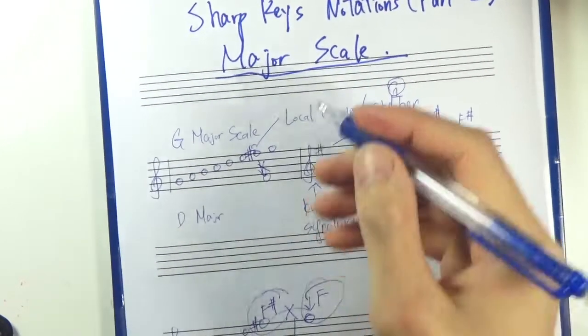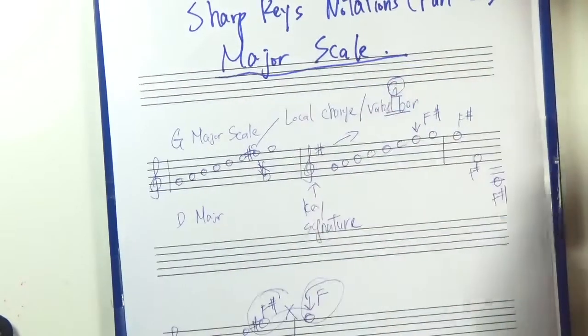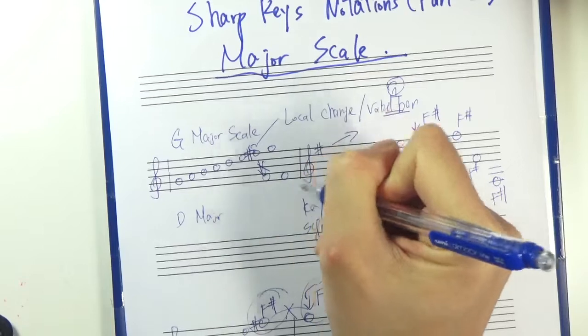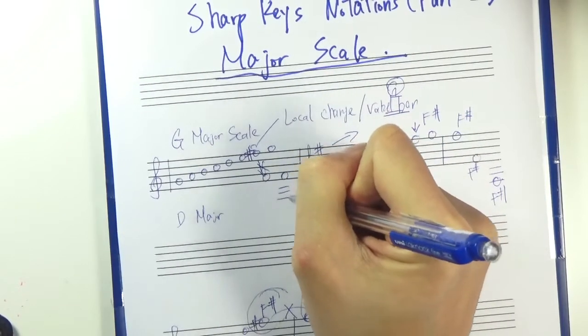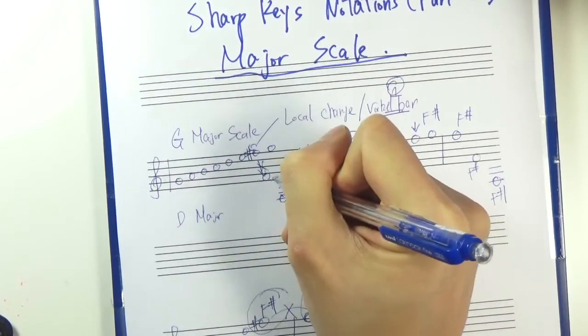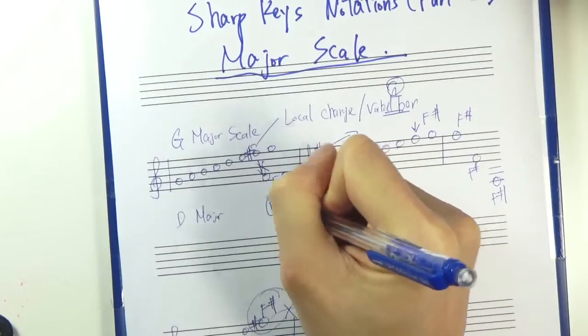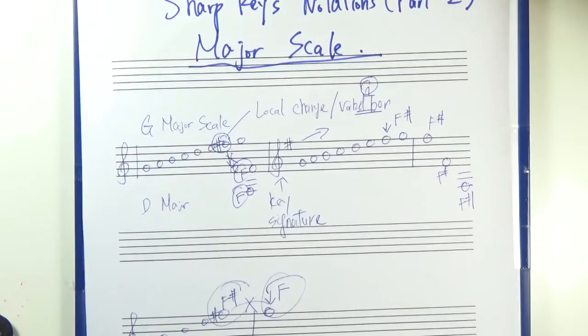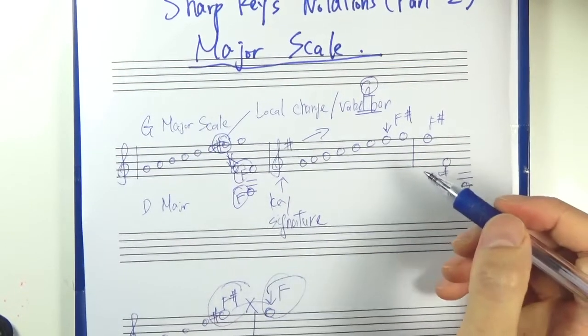Alright. So that's the difference here. If I have other Fs in other octaves here, say this one. And also this one. These are going to be Fs. And only this one is going to be an F sharp. So that's the main difference here.